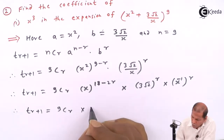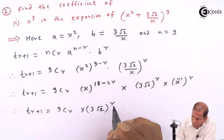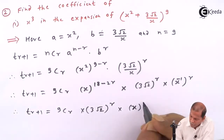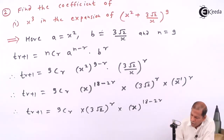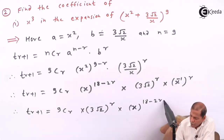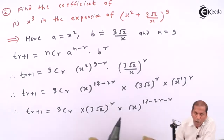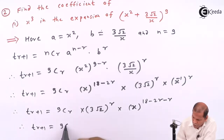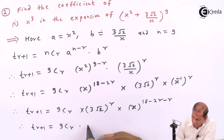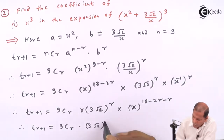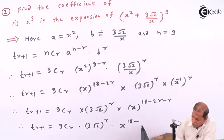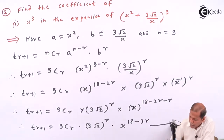On further simplifying, T(r+1) is equal to 9Cr into (3√2) raised to r into x raised to (18 minus 2r minus r), which gives us x raised to (18 minus 3r). Let us denote this as equation number 1.